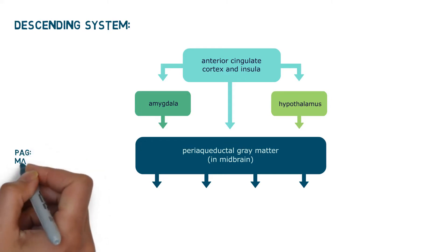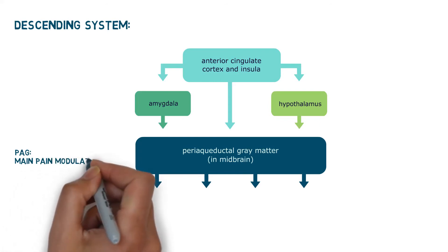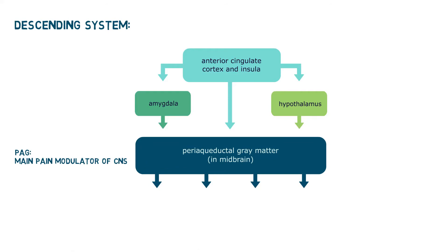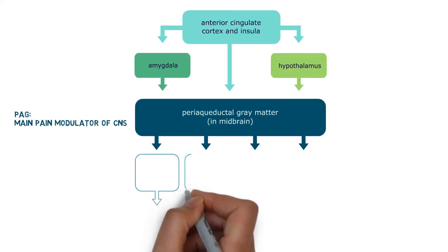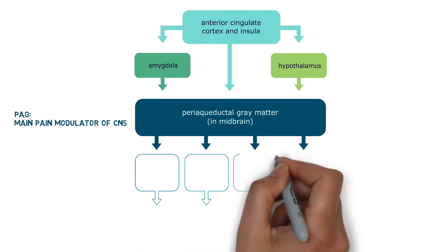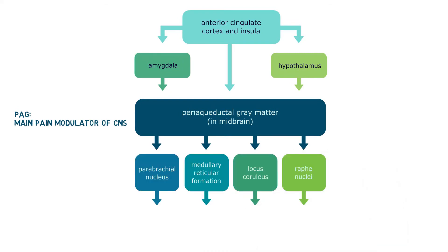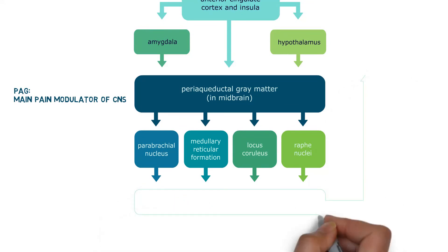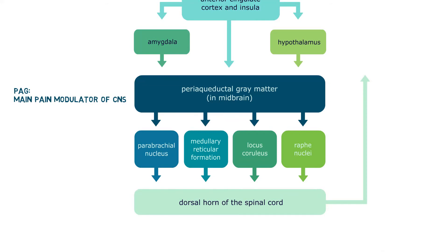The periaqueductal gray matter, or PAG, of the midbrain is the main pain modulator of the central nervous system. The PAG activates the centers that release an enkephalin-like chemical. It sends signals to the parabrachial nucleus of the pons, the medullary reticular formation, the locus coeruleus, and the raphae nuclei in the brain stem. These four centers send their signals to the dorsal horn of the spinal cord, most into the laminae — the area where painful stimuli enter the spinal cord.